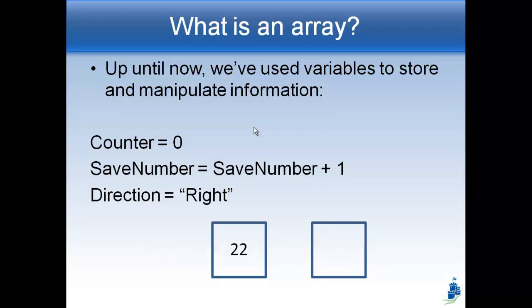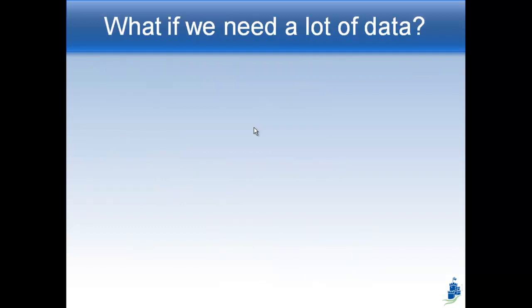And then later, you can get that 22 back out if you want it. Right? Or you can also put text in like that. So you get this box. You create the box by, who can tell me how you make the box in the first place? Yeah, declare it. Say dim my variable as da da da. Right? And then that creates the box. You can put stuff into it by saying my variable equals something. And you can get stuff out of it by saying something else equals my variable. Right? And that takes the information out.